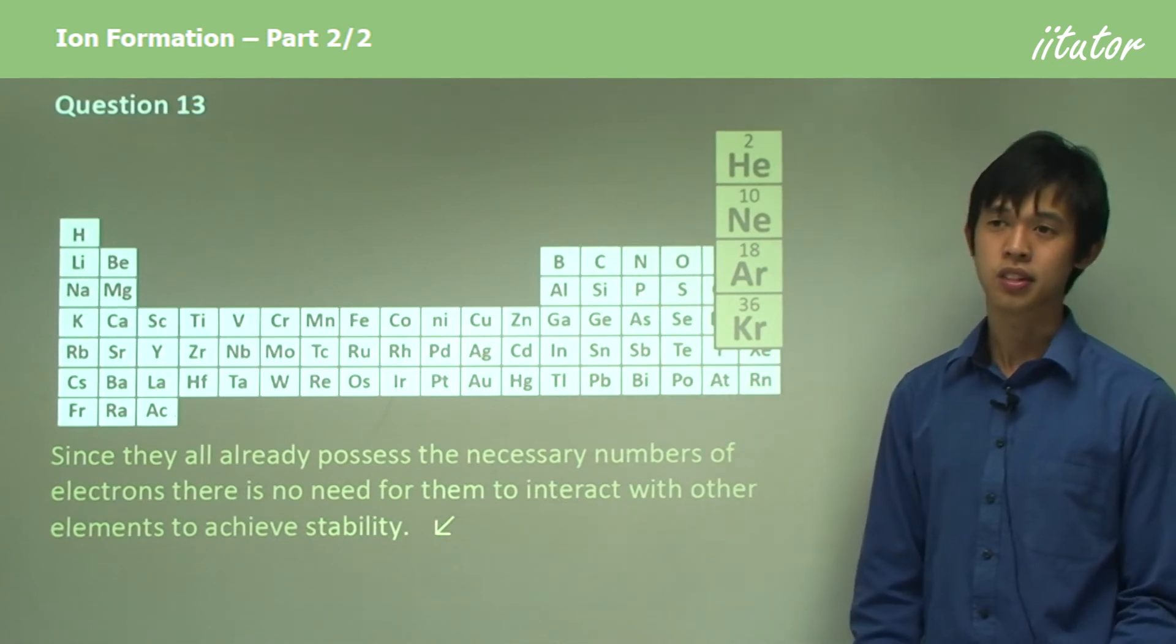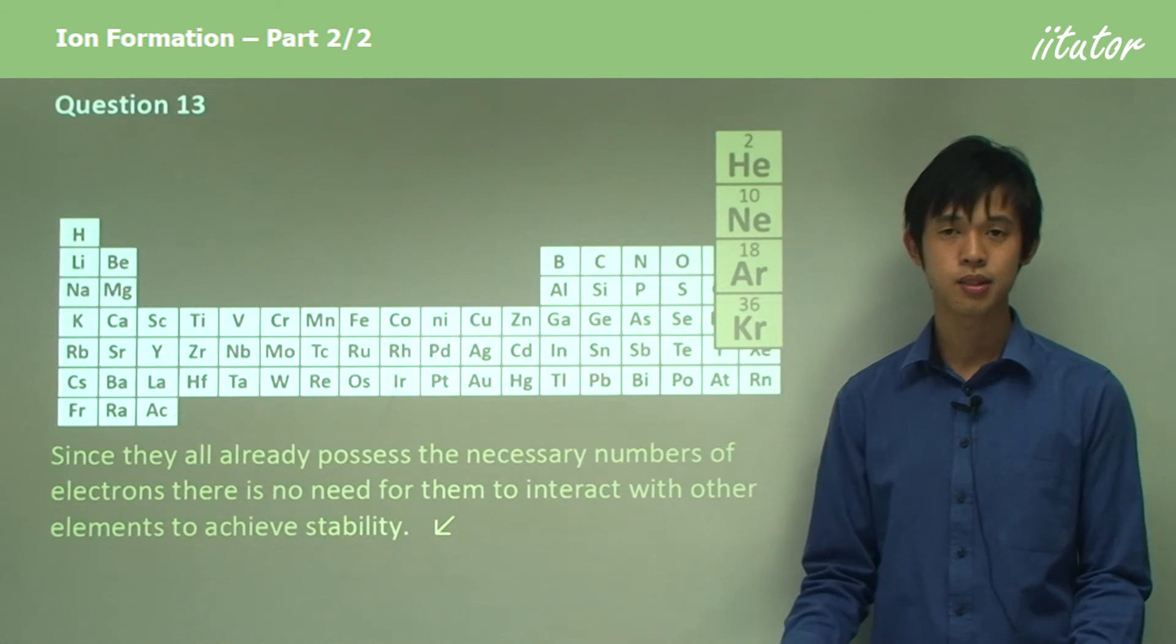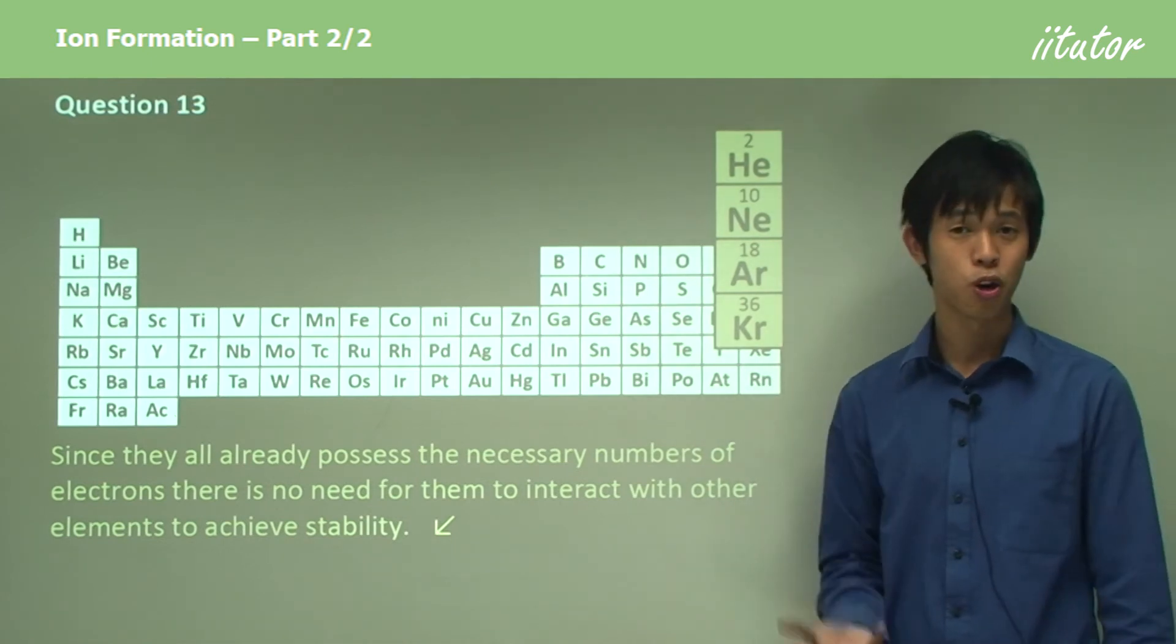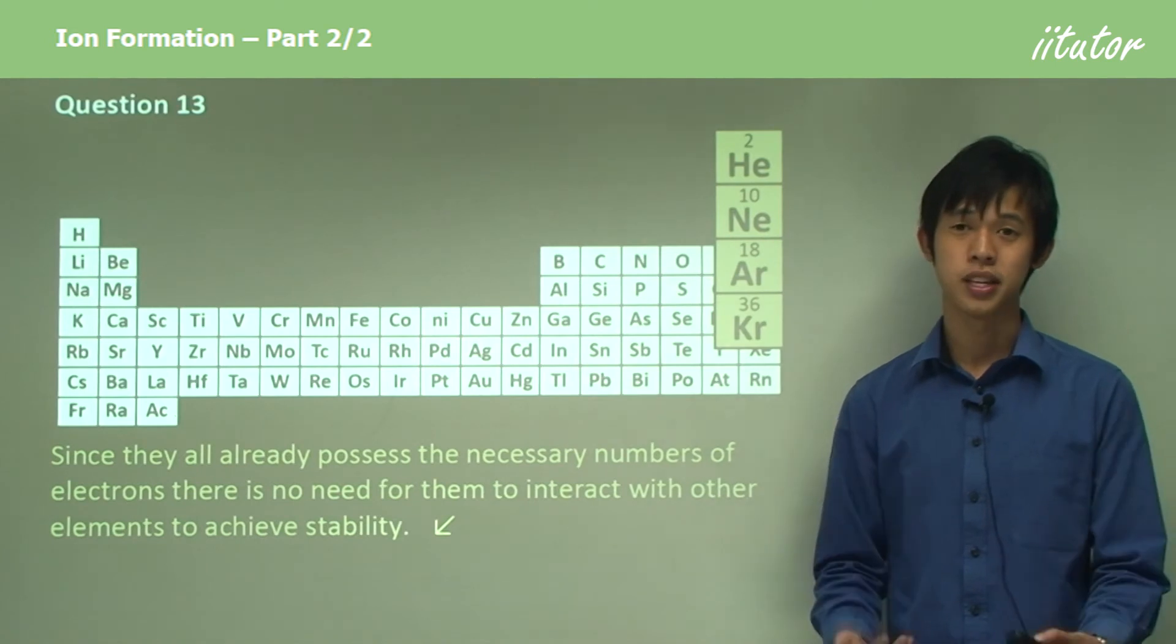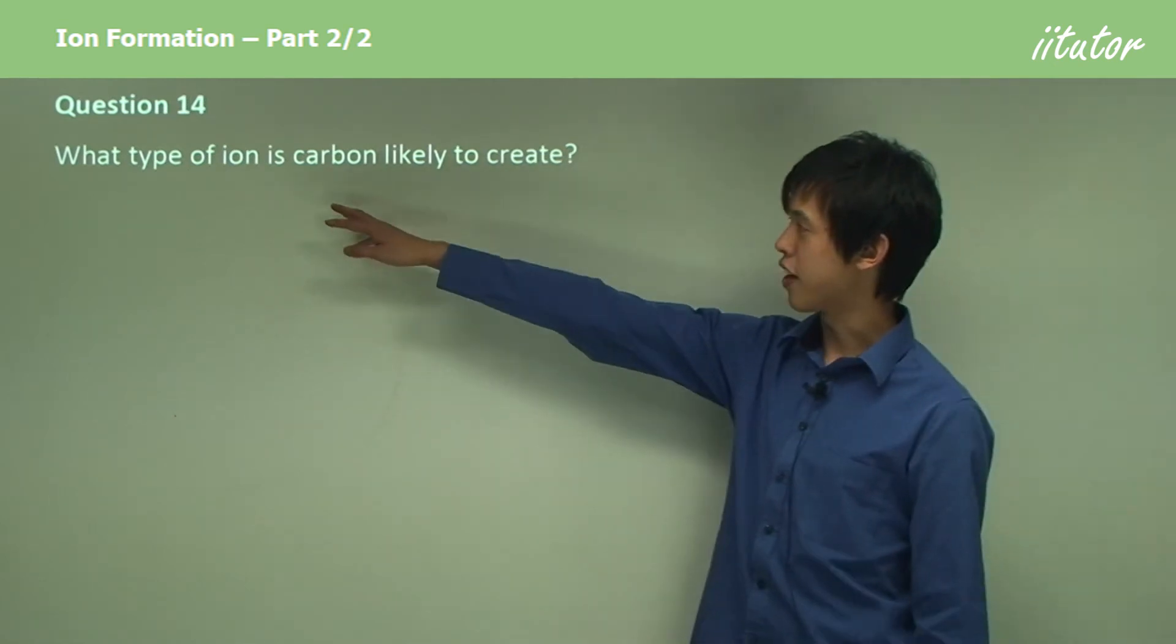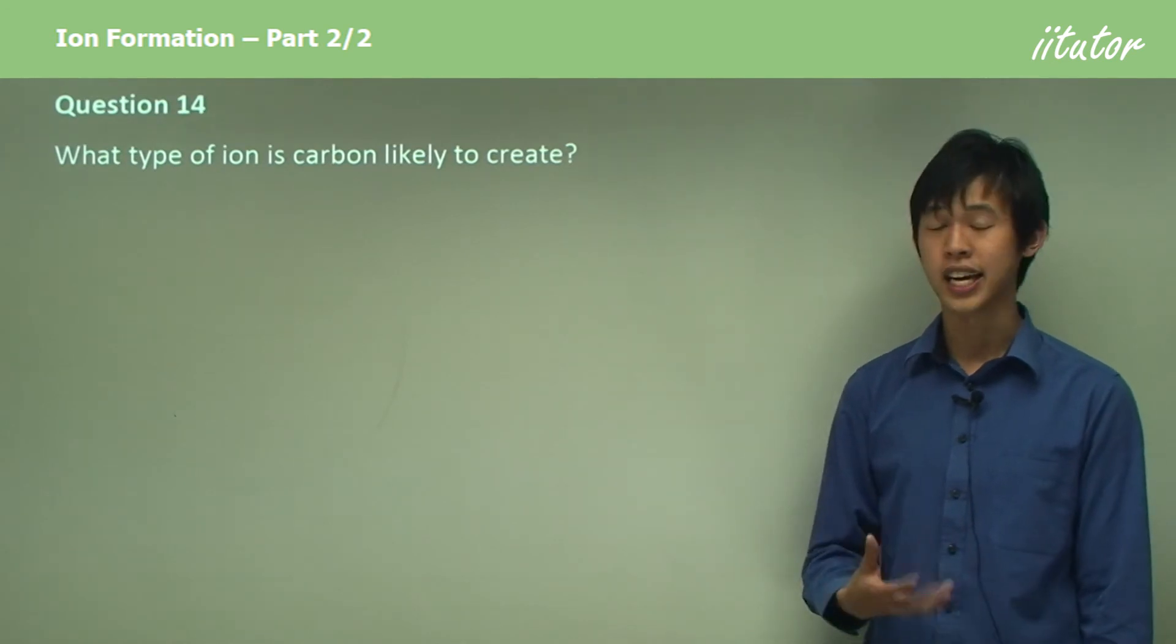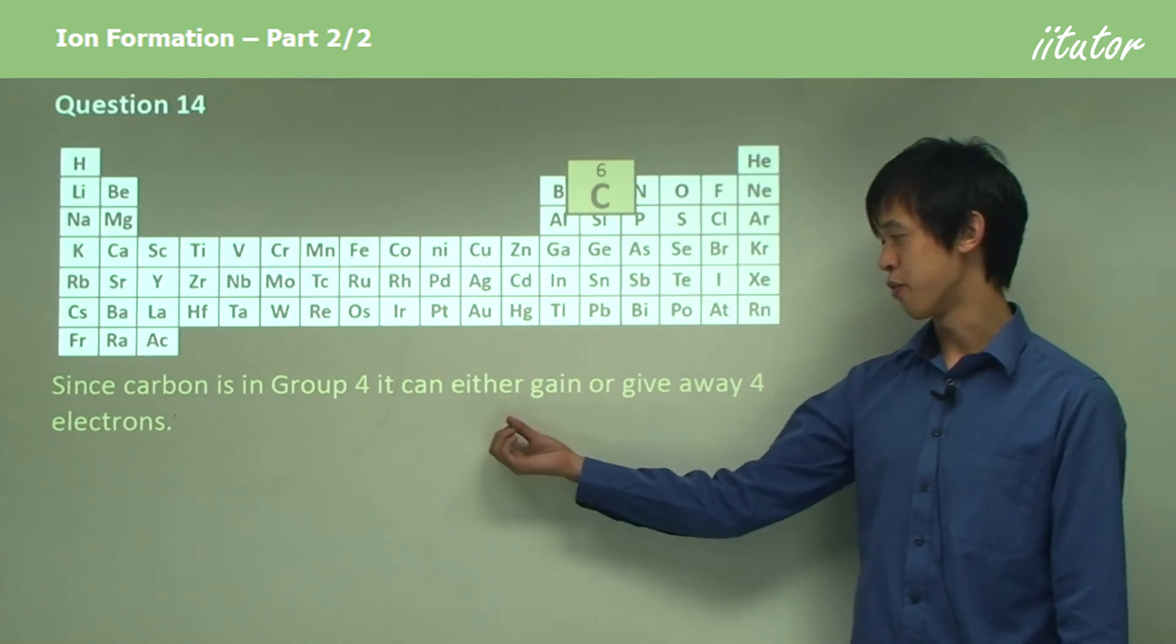That's why they don't react - they've already got what they need. That's why we sometimes call them the noble gases, because they're what each element is aspiring to become like. Here's the last question: what type of ion is carbon likely to create? Check your periodic table once again and you'll see that carbon is in group four.